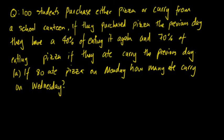So firstly 100 students purchase either pizza or curry from a school canteen. So we need to make the transition matrix. So what I'm going to do is put pizza on the left hand side and then put curry on the right and on the bottom.